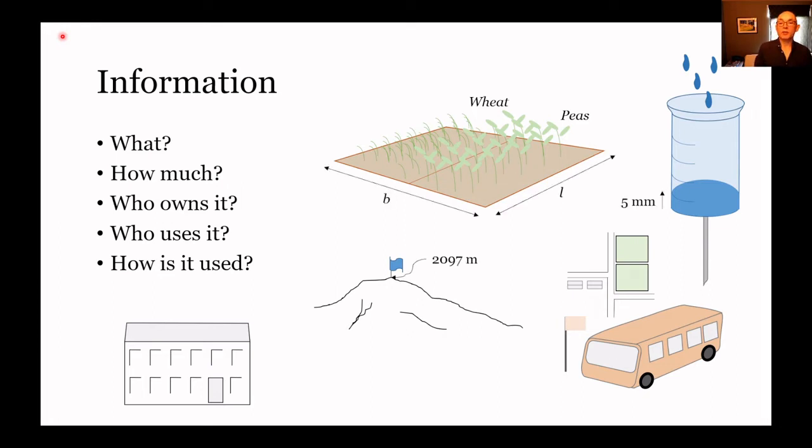We can also ask how much of something is there. This how much may be how much is growing in a field in terms of weight, by volume, or by area. It might be a volume of water, collected rainfall, precipitation. Or how much is also actually elevation. When we're looking at a digital elevation model, that is telling us how much elevation there is in a particular area.